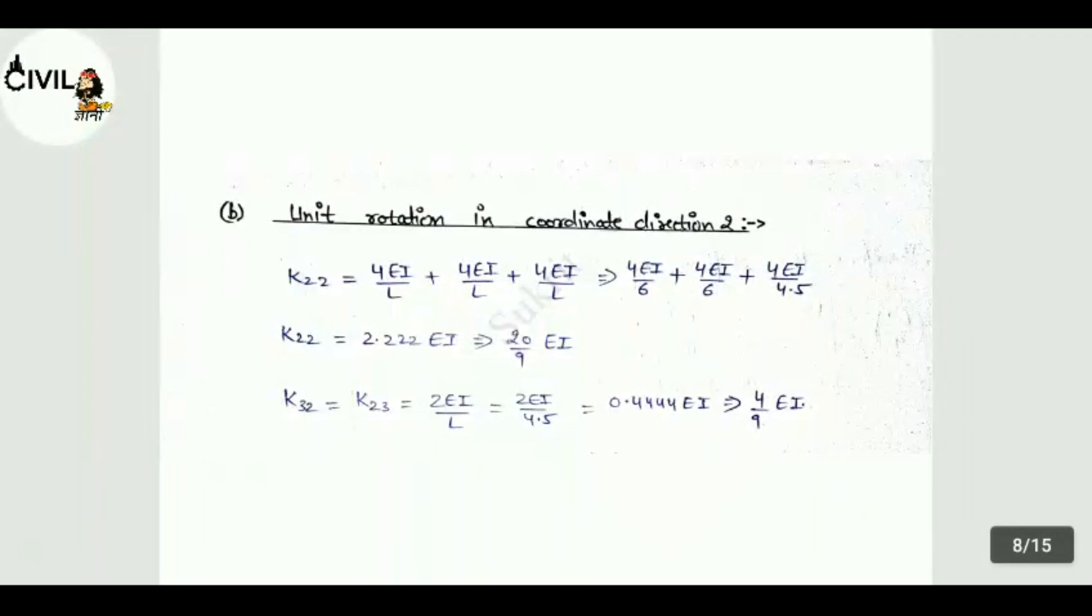Next, unit rotation in coordinate direction 2. This gives values of K22 and K32. For K22, we apply at coordinate 2, unit displacement is also at 2. Means force at 2 due to unit displacement at 2. For this case we take 4EI/L. C will affect CB, CD and CE. So 4EI/L plus 4EI/L plus 4EI/L. In this, C to B distance is 6, C to D distance is 6, and C to E distance is 4.5. So K22 value is 20/9 EI.